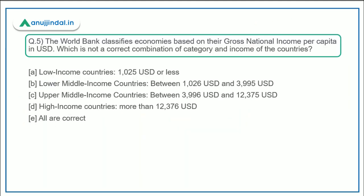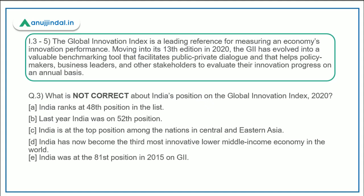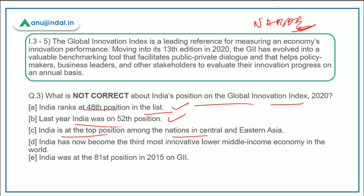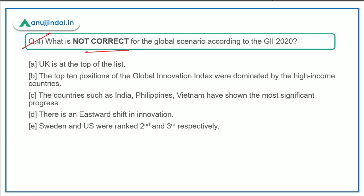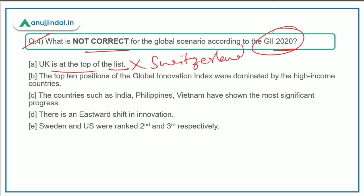This index is very important for Phase 1 as well as the ESI paper of RBI Grade B and NABARD exams. For question three, what is not correct about India's position — India is at the top position in central and southern Asia, not central and eastern Asia, so option C is the incorrect statement and the correct answer. For question four, about the global scenario — UK is not at the top; Switzerland is at the top. So option A is incorrect and is the correct answer.